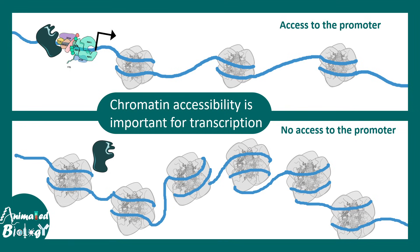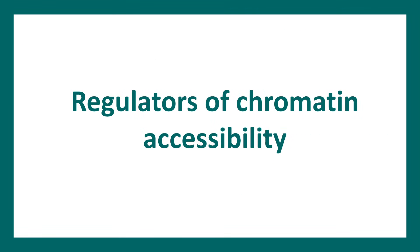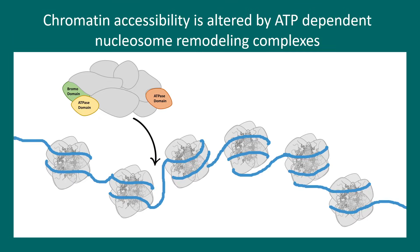The metaphase chromosome is mostly transcriptionally inactive because it is densely packed — it is good for chromosome segregation, not for other molecular biology processes. So let's talk about what are the regulatory elements of chromatin accessibility. Nucleosome remodeling factors are the key players determining chromatin accessibility.